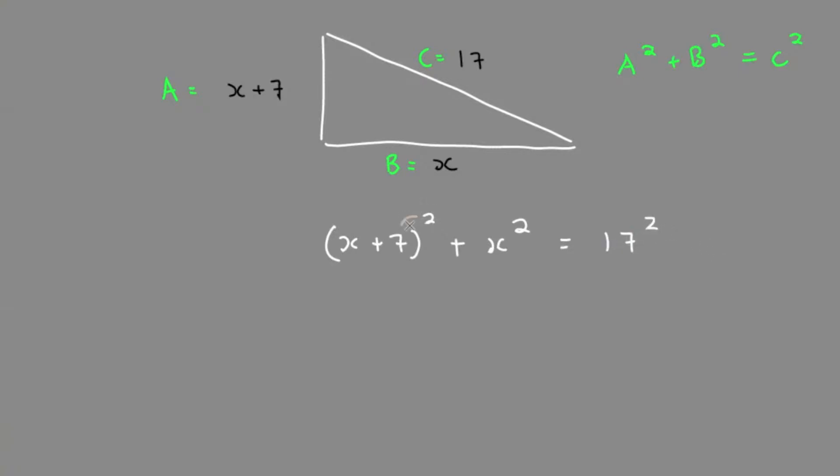Make sure you don't distribute the two in. This is not the same thing as 7x squared. When there's two terms like x plus 7 squared, we're not allowed to distribute the exponent in.